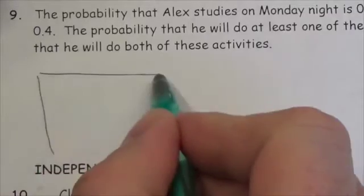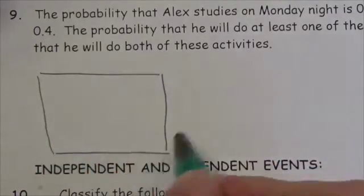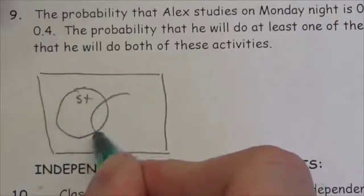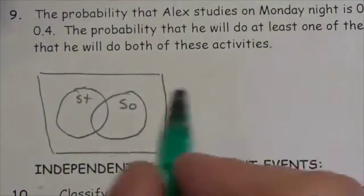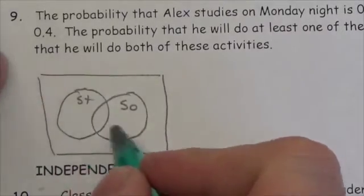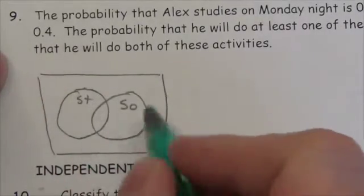So let's draw a Venn diagram for this, even before I get to whatever's remaining here. So we've got studying here, looks like we got soccer here. So the probability that he studies on Monday night is going to be 0.5. The probability that he plays soccer is going to be 0.4.